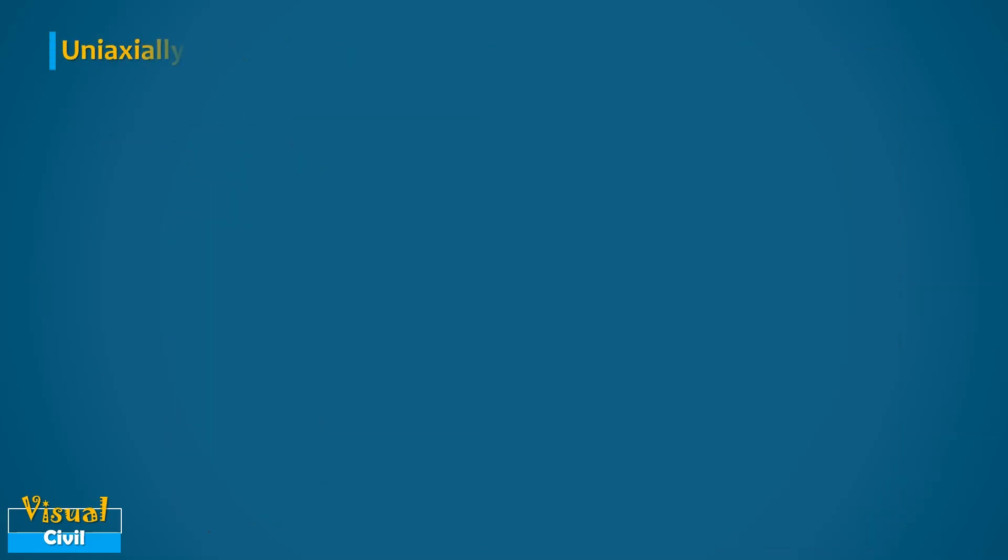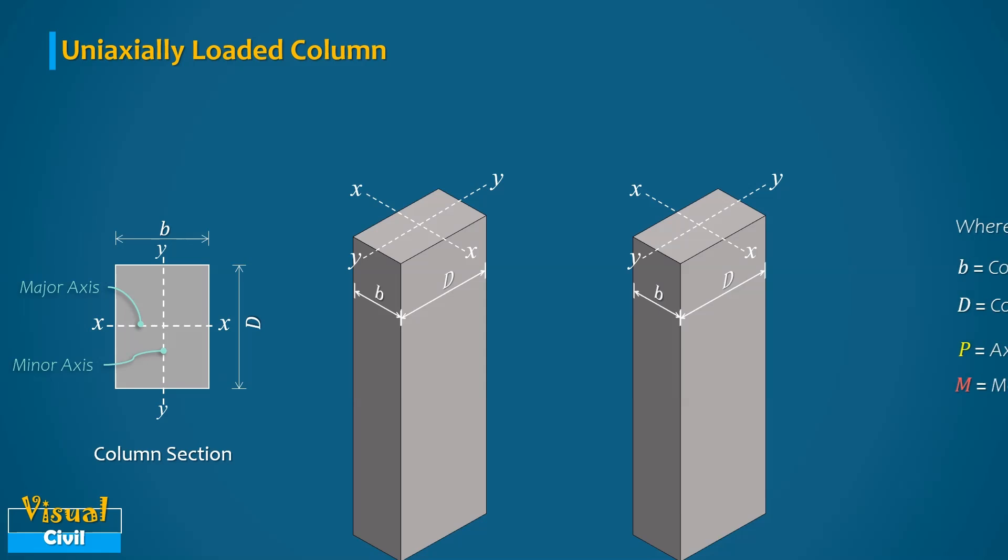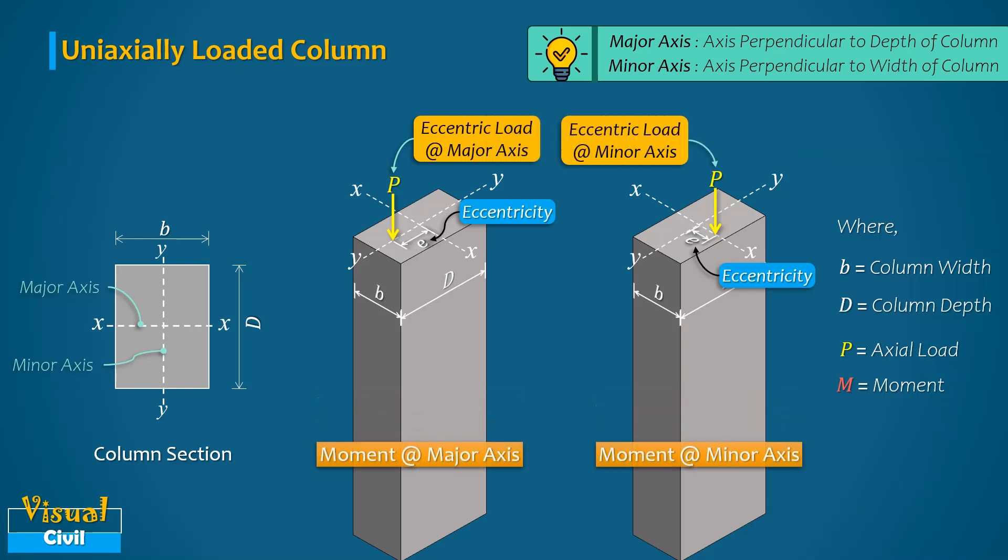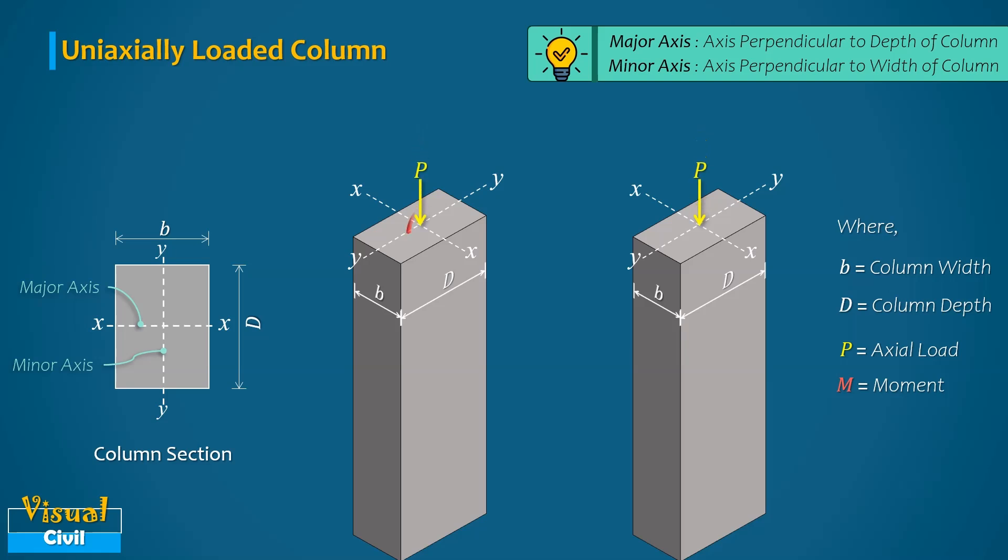Now, let us see the second type that is uniaxially loaded columns. When the axial load is acting at an eccentricity E from the column center along any one axis only, then it is called as uniaxially loaded columns or axial loaded column with uniaxial moment. Sometimes when a column is subjected to an axial load with a moment about any one axis, that is either major axis or minor axis, then also the column is in this category.